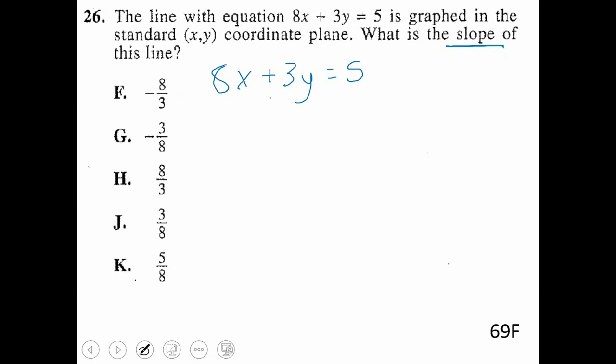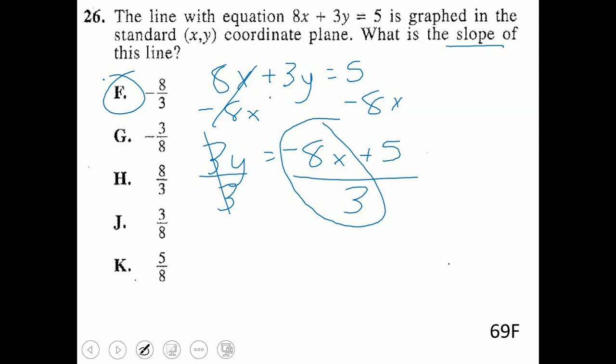So we'll minus 8x to this right side, bring down the 3y. And again, you do not combine the x and the number. That's going to stay a minus 8x plus 5. And now we'll divide by 3 to get y by itself. So we'll divide everything by 3 here. We're only looking for slope. Slope is located with x. So that's a negative 8 divided by 3, which is going to make that F.